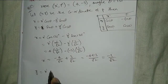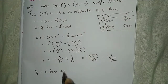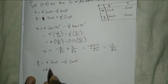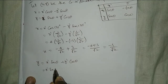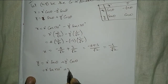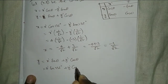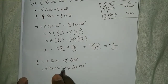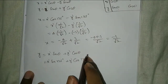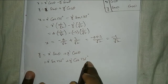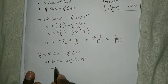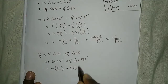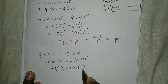Next, y equal to x dash sin theta plus y dash cos theta. x dash sin 135 degrees plus y dash cos 135 degrees. sin 135 degrees is positive 1 by root 2, cos 135 degrees is minus 1 by root 2. x dash is 4, so 4 into 1 by root 2, plus minus 3 into minus 1 by root 2.